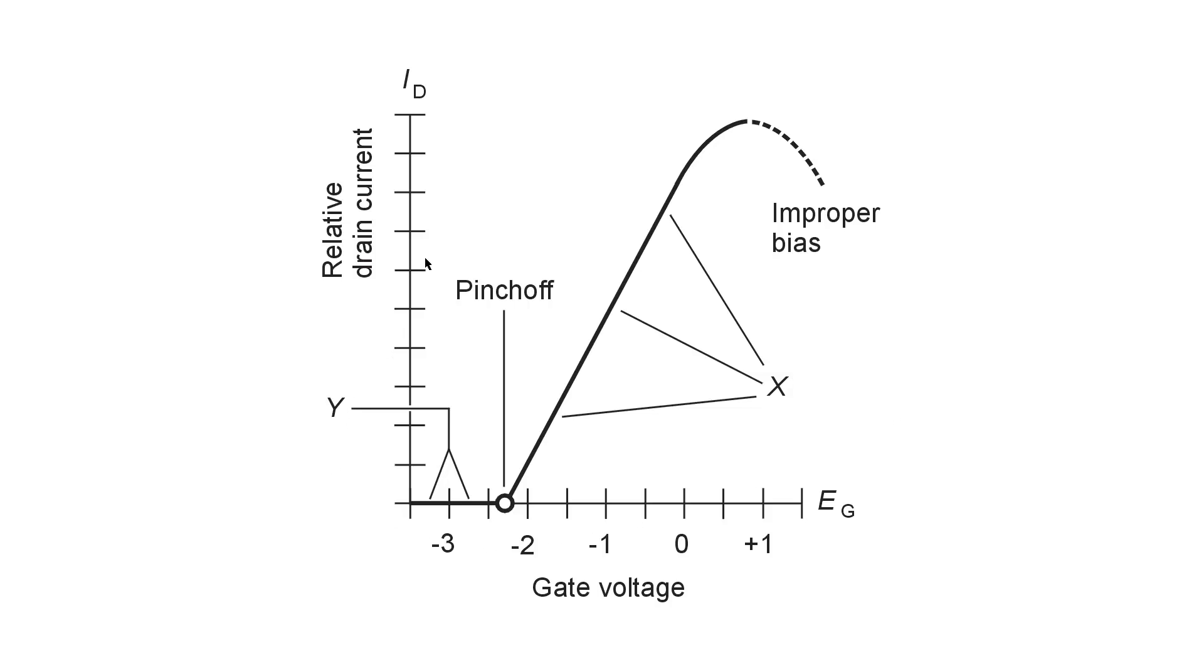This is an amplifier that uses an N-channel junction field effect transistor. And we're graphing here the relative drain current versus the actual gate voltage.